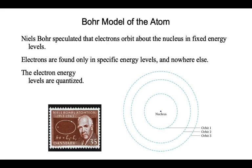It was Bohr who put this model forward. He said electrons exist at these discrete energy levels, and he referenced them as orbits — because they go around the nucleus, kind of like how planets go around the sun. As we dig deeper, we find the orbit model is horrible and you should never use it, because they aren't really orbits. But what it does give us is this idea of energy levels.